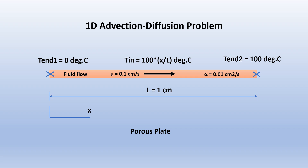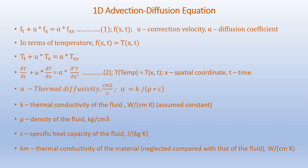The 1D advection-diffusion equation is given as F_t plus u times F_x equals alpha times F_xx, where F is any dependent variable such as temperature or concentration, u is the convection velocity, and alpha is the diffusion coefficient.